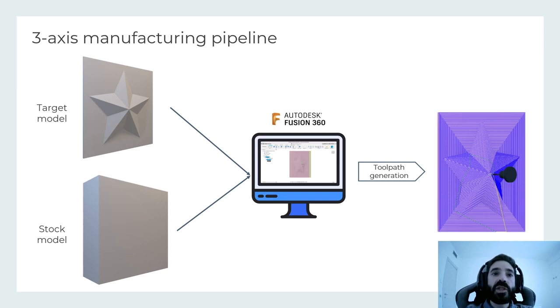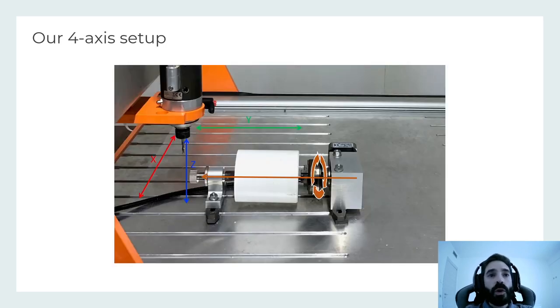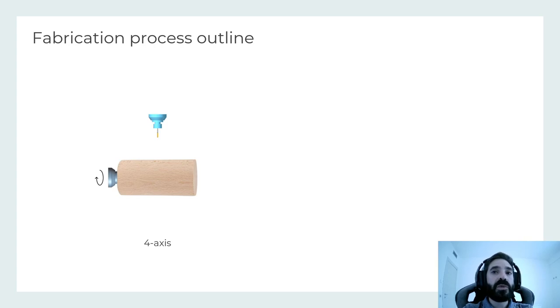In this work, we use a 4-axis machine obtained by adding a rotation support tool to a traditional 3-axis machine. This setup is not expensive and widely available in the market. The key idea of our method is to reduce the problem of 4-axis fabrication to multiple 3-axis machine passes from different directions obtained by rotating the tool.